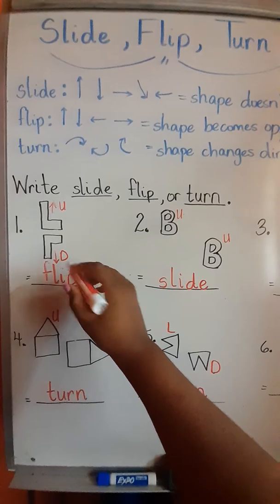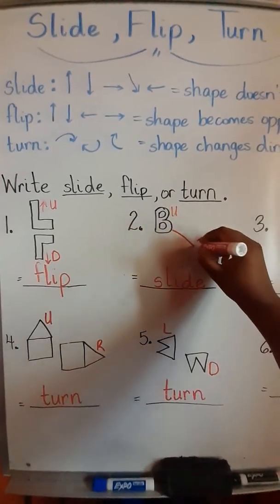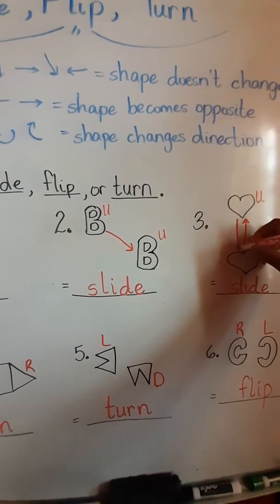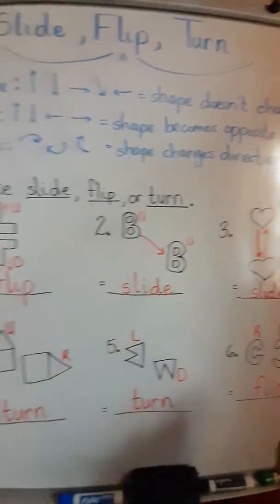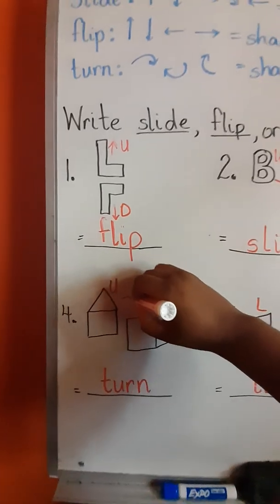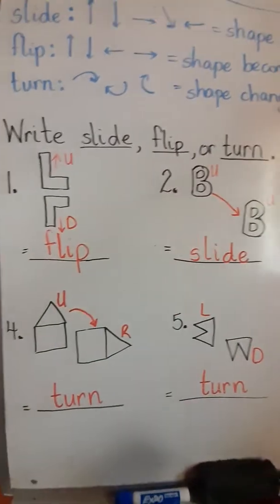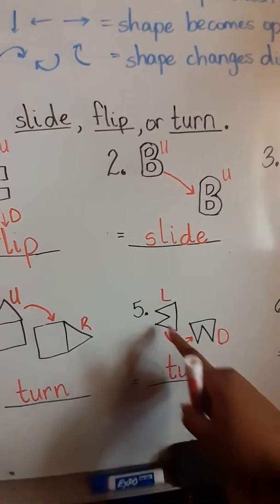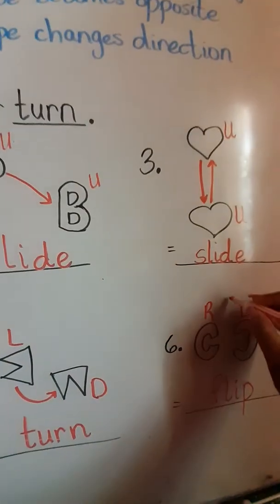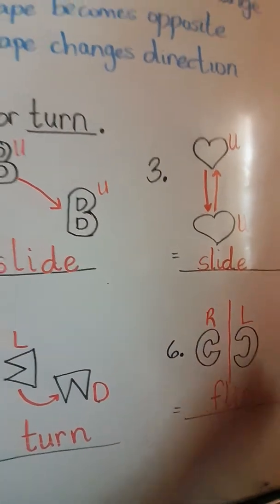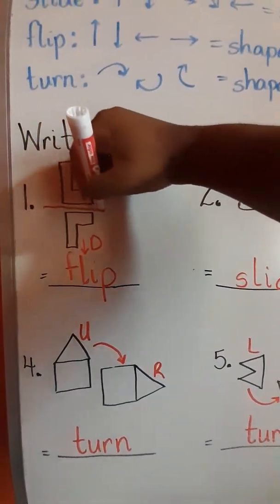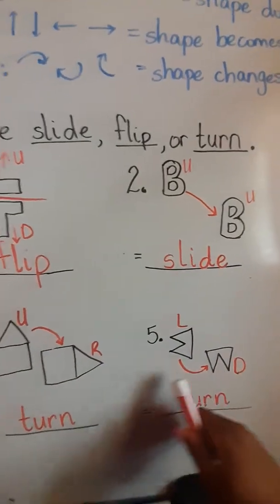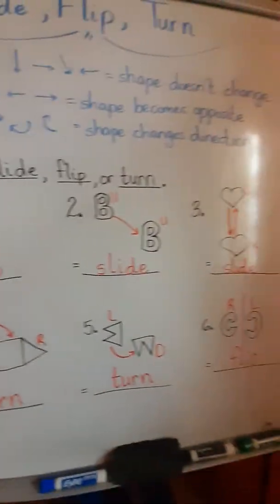This shape flipped. This shape did a diagonal slide. This shape went up or it could have went down. Either way, it still slid. This one did a turn, so we would use an arrow like that. And we can use an arrow like this to signify this turn. And then flip, we could go down the middle and make it look like a mirror. Sometimes you would see these lines and that kind of hints to you exactly what is happening with the shape.